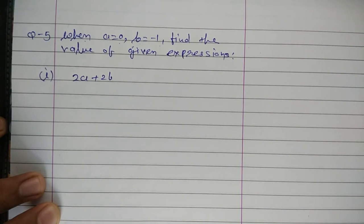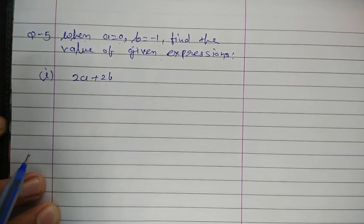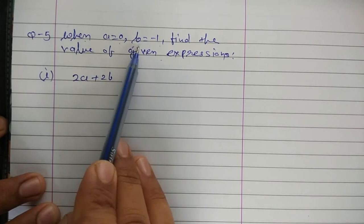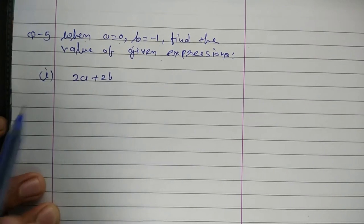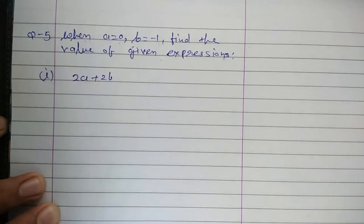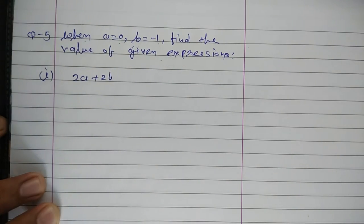Question number 5. When A is equal to 0, B is equal to minus 1, find the value of given expressions. In this question also, expressions are of two variables A and B and their values are given. Value of A is 0 and value of B is minus 1. We have to put these values in the expression and find the value of the expression.